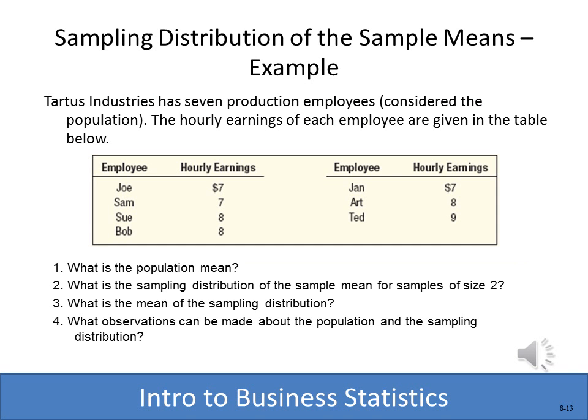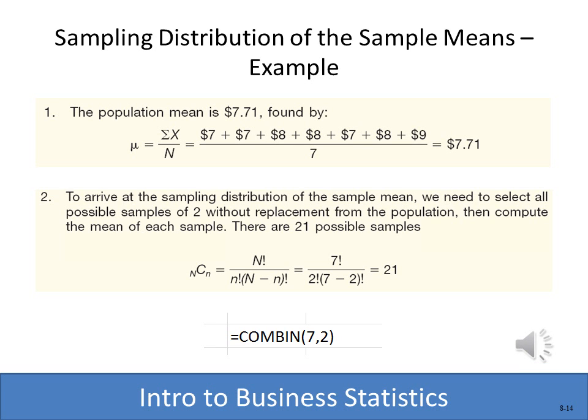Let's go through an example. A company has seven production employees with listed hourly earnings. We want to find the population mean and the sampling distribution of the sample mean for a sample size of two. The population mean is calculated by adding all values and dividing by N, giving us a population mean of $7.71.